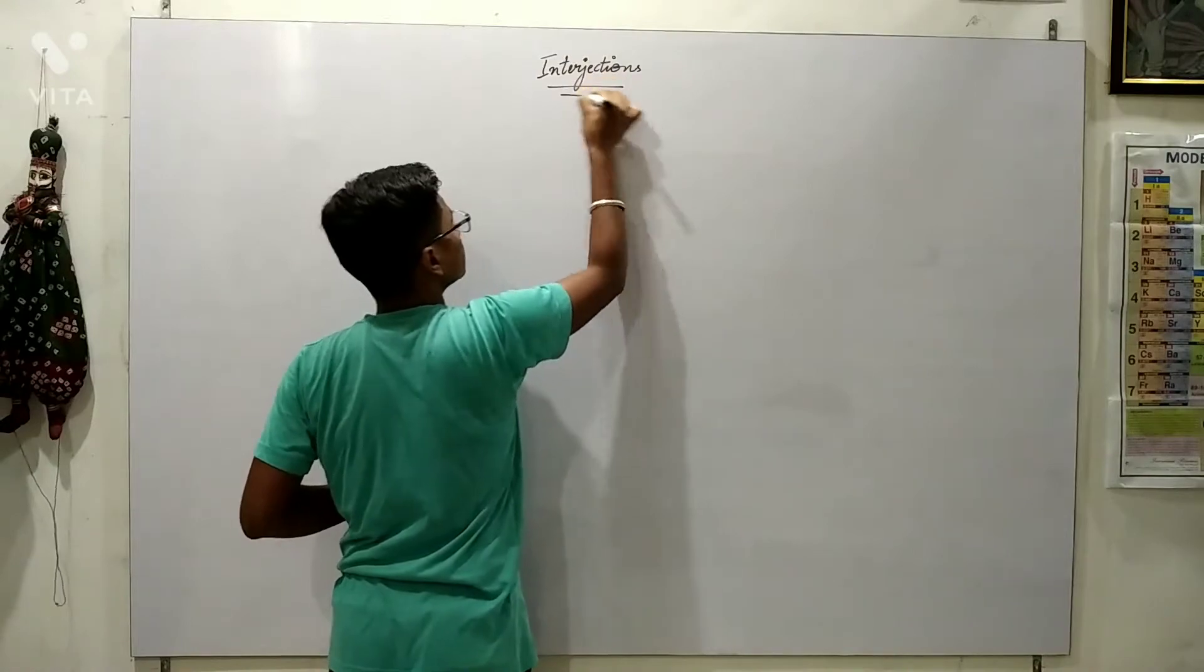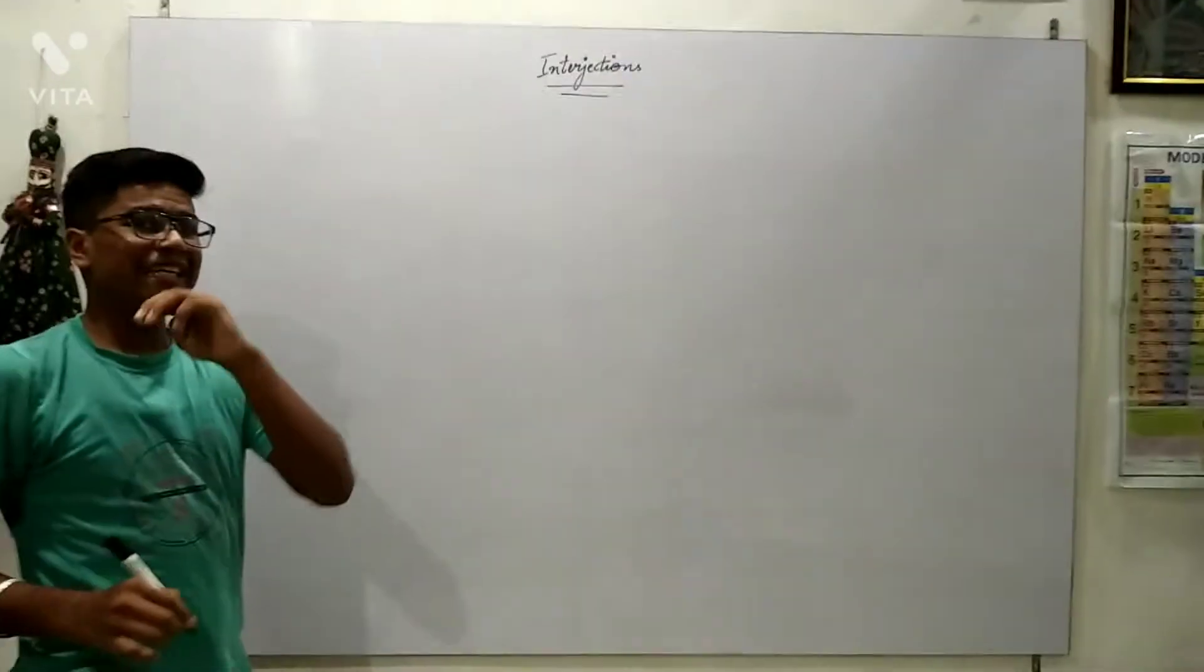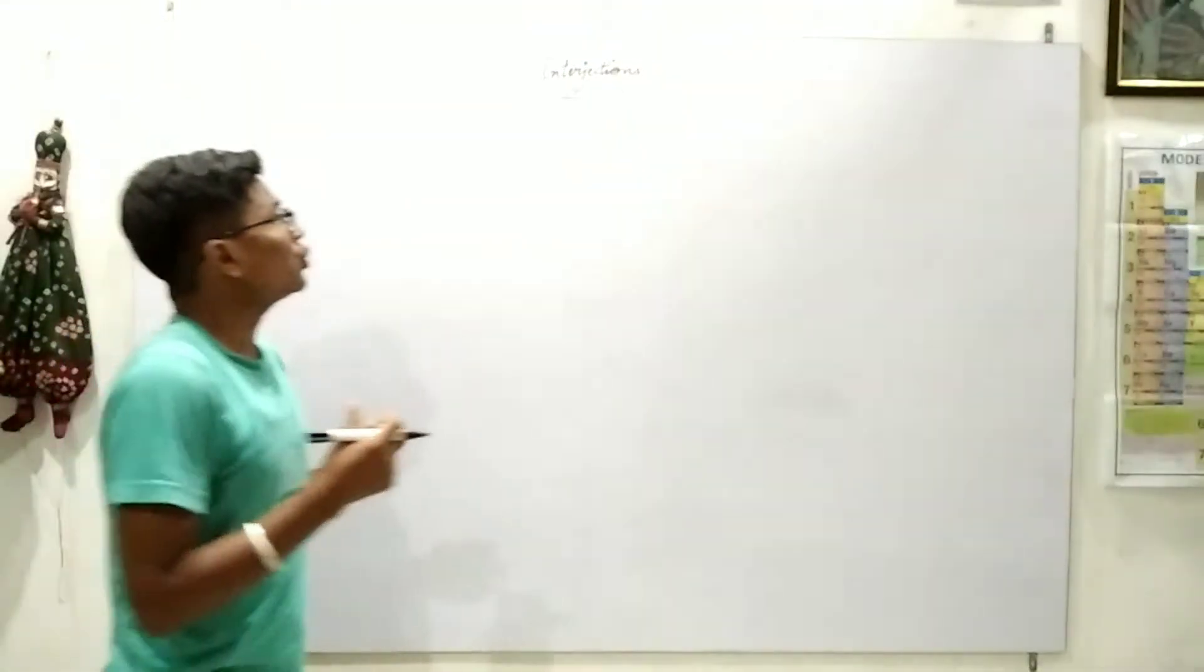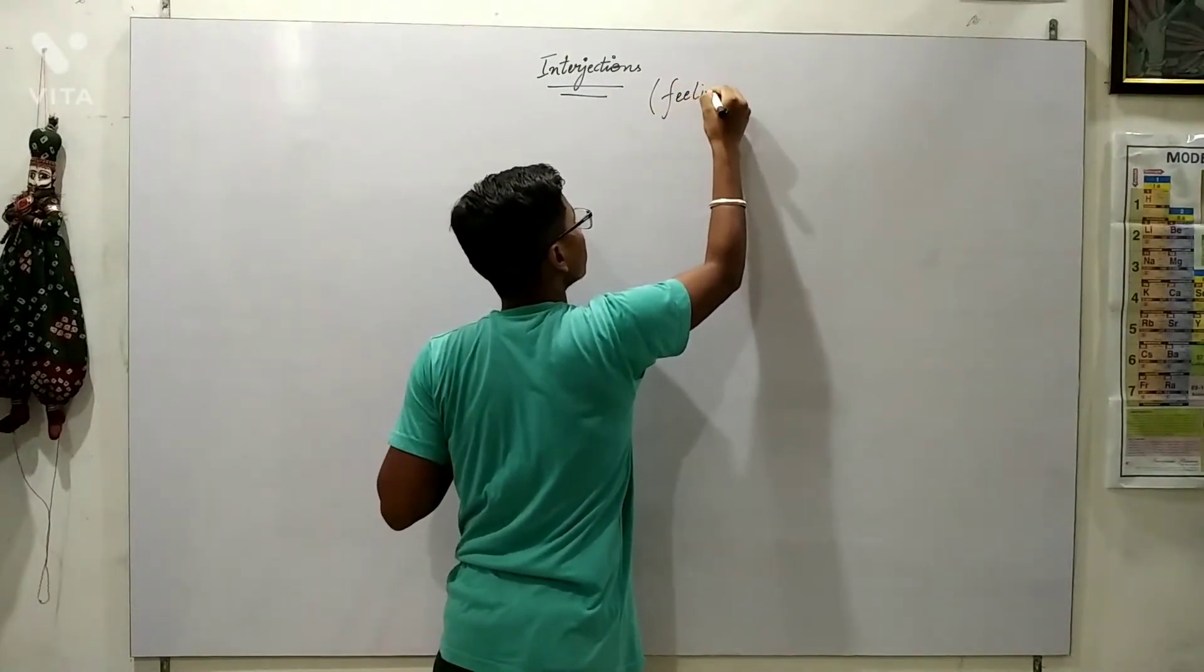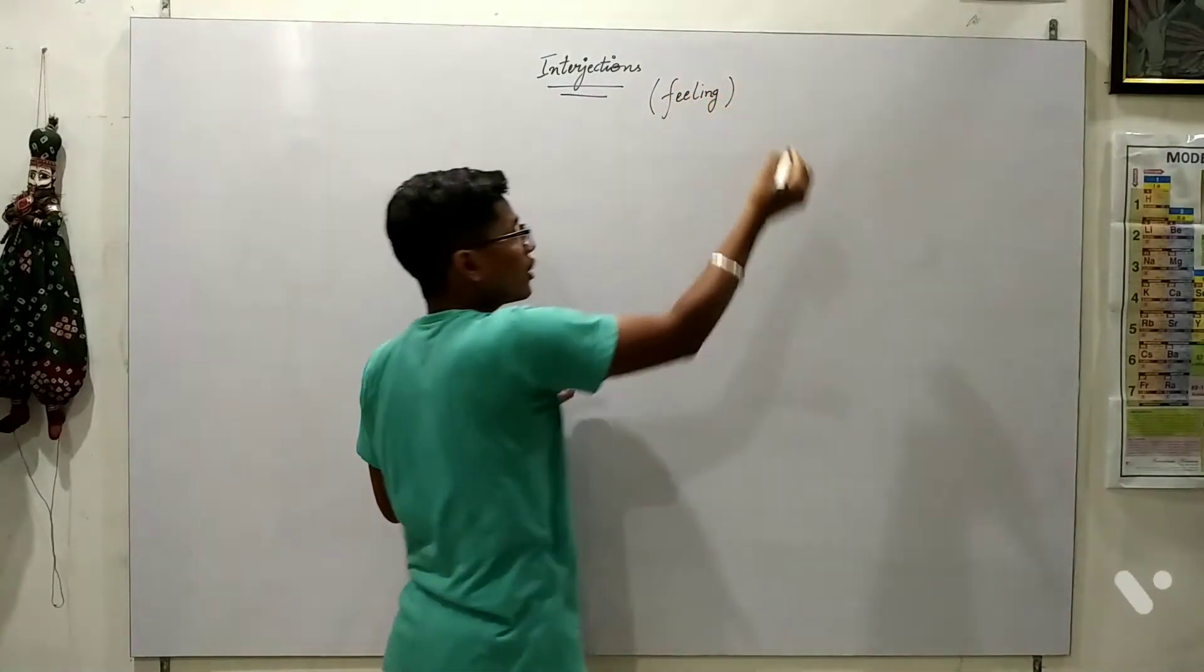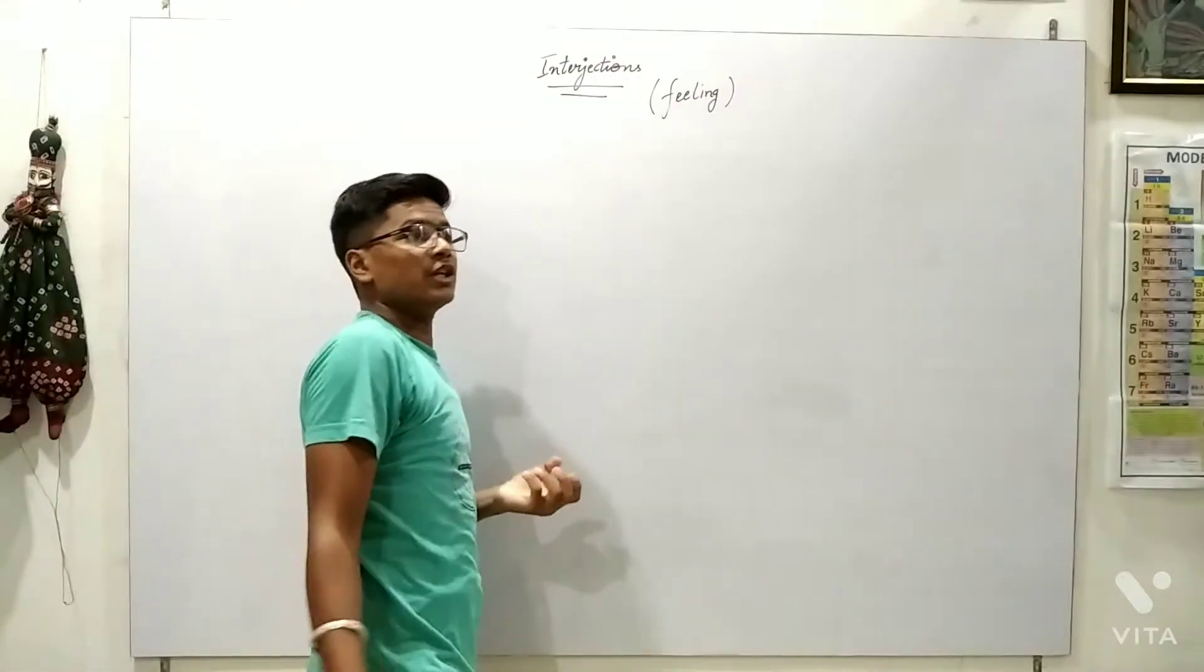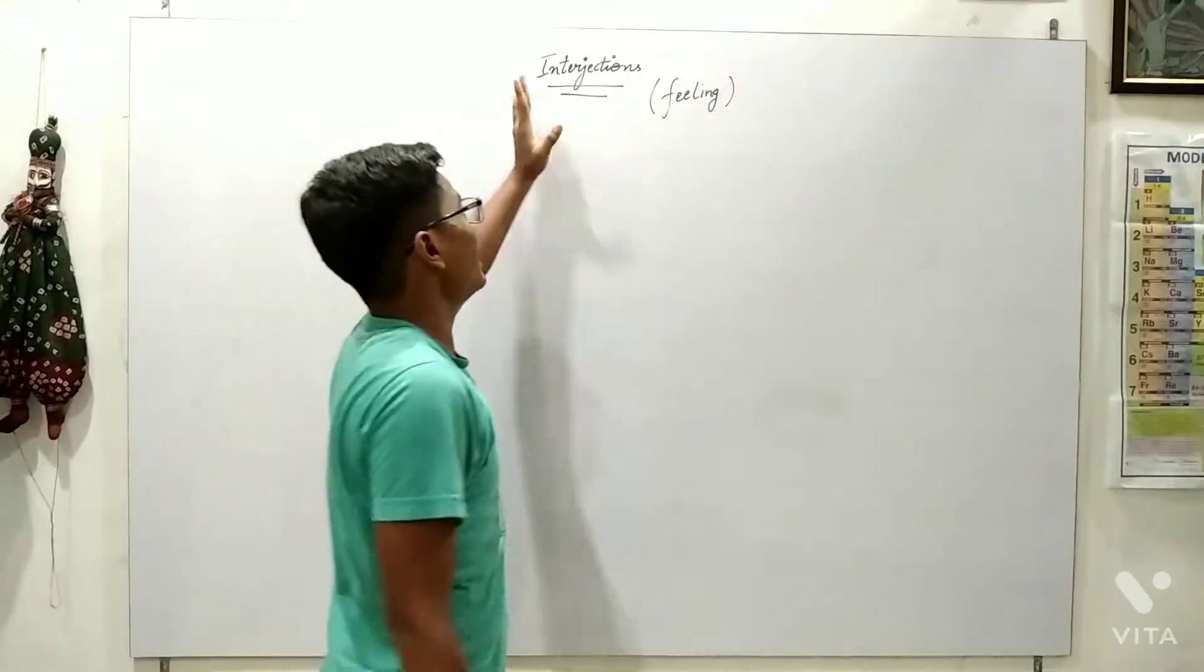Interjections. So what is the interjection? To show your feeling. Feeling show karna ko, you be like joy, sorrow, excitement, shock. That is interjection.